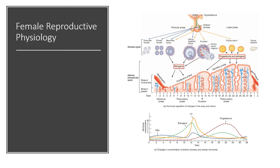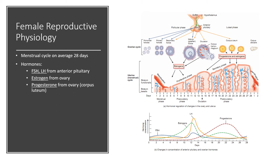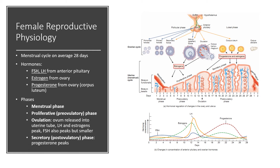Let's talk about female reproductive physiology, specifically the menstrual cycle, which is on average 28 days but can vary by a few days. The hormones involved are FSH and LH from the anterior pituitary, and estrogen and progesterone, both made in the ovary. The cycle can be divided into four phases. The menstrual phase involves sloughing of the endometrium and menstrual bleeding. After that, the proliferative phase is where the endometrium rebuilds itself — cells proliferate to make that happen — also known as the pre-ovulatory phase.